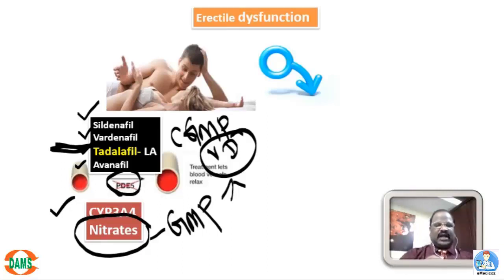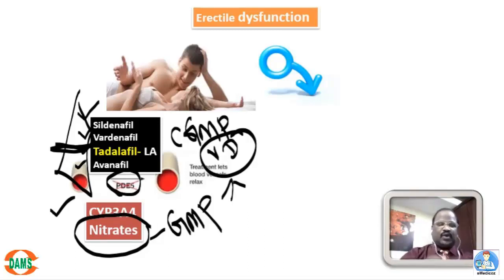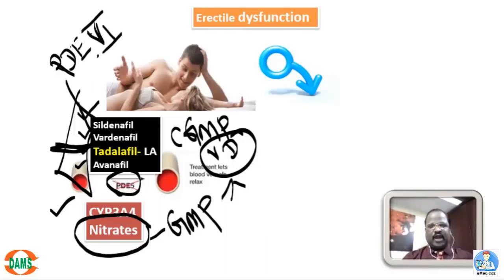Adverse effects due to vasodilation include hypotension, headache, nasal congestion, and facial flushing. On chronic therapy, sildenafil also inhibits PDE-6 enzyme in the retina, thereby causing blue color vision defect — an important side effect of sildenafil on chronic therapy.